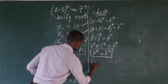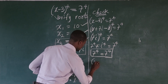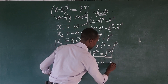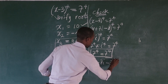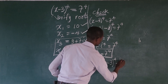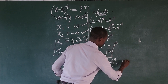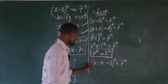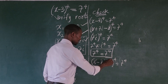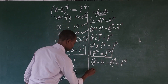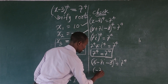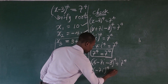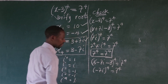Now let's do a similar check for x4 = 3 - 7i. Substituting into the equation, we get (3 - 7i - 3)^4 = 7^4. Here we still have the 3 and -3 cancelling, so we're left with (-7i)^4 = 7^4.